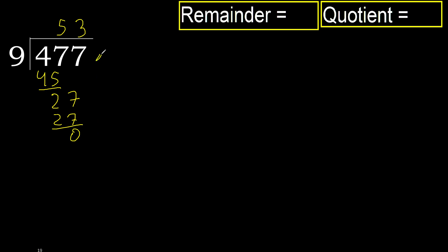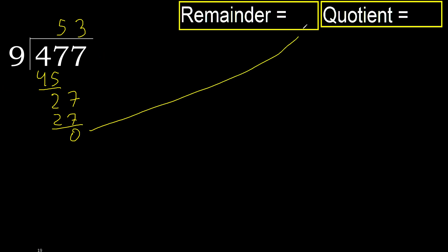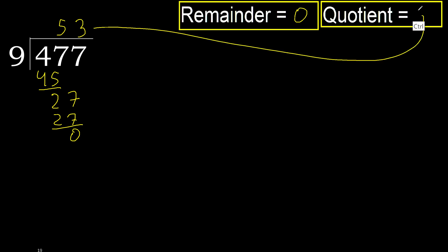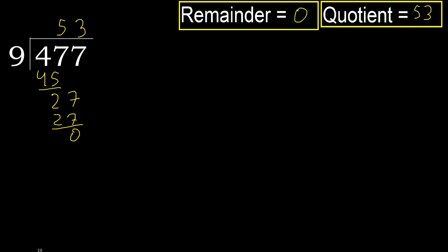Next — that is not a number, therefore finish it. 477 divided by 9 is 53.